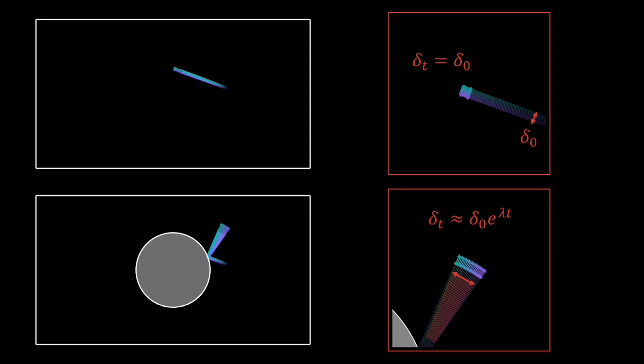This means that there needs to be some kind of local mechanism, called stretching, that separates nearby trajectories. For the chaotic billiard, this mechanism is the collisions with the disk in the middle.